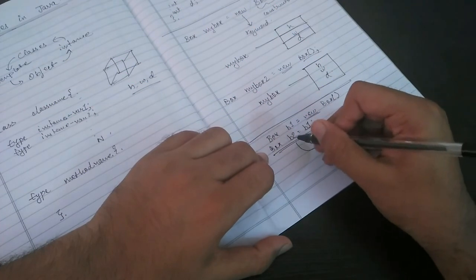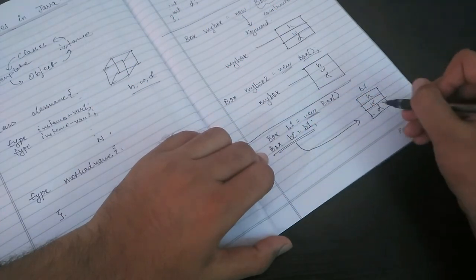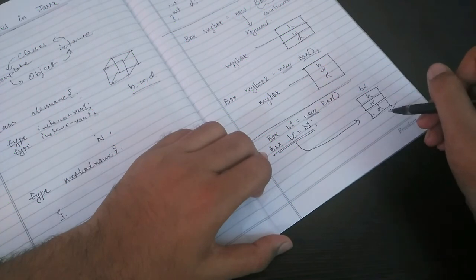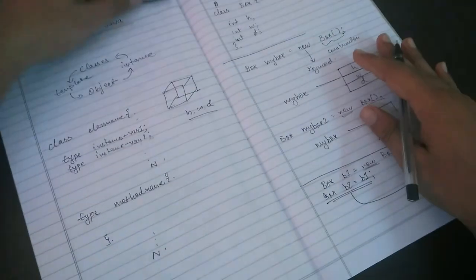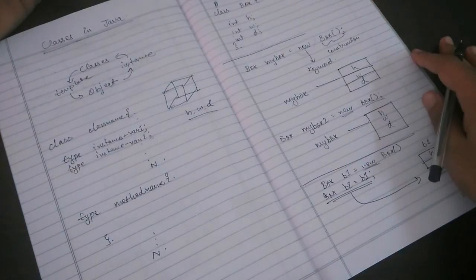So using b1 or b2, we can access the same memory or the same variables. So we will learn more about classes in the next part of this video.